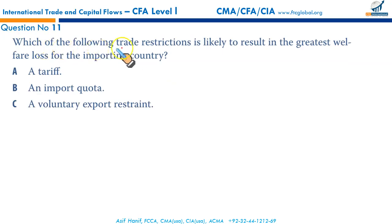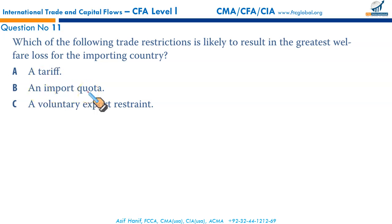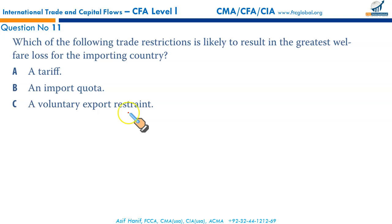Next: which of the following trade restrictions is likely to result in the greatest welfare loss for the importing country? A tariff is a source of revenue for the government. An import quota restricts the physical quantity entering a country. However, if there is a voluntary export restraint imposed by the exporting country and it results in an increase in price in the importing country, the benefit goes to the exporting country — this results in the greatest welfare loss for the importing country. So C is the correct option.